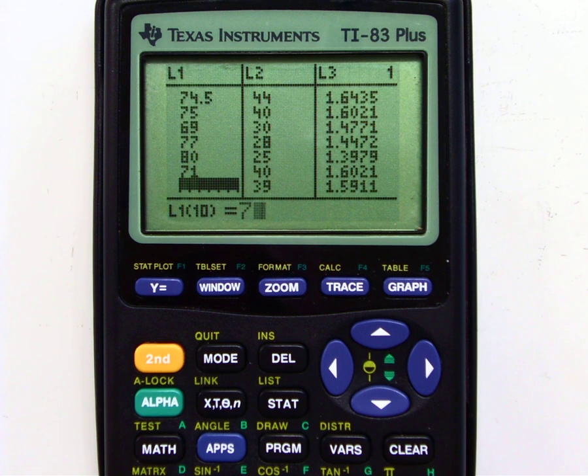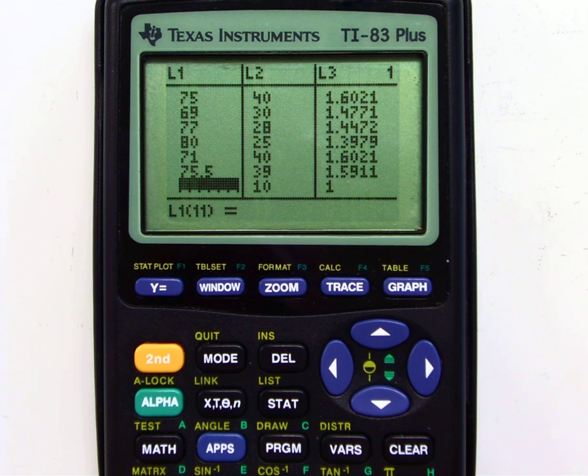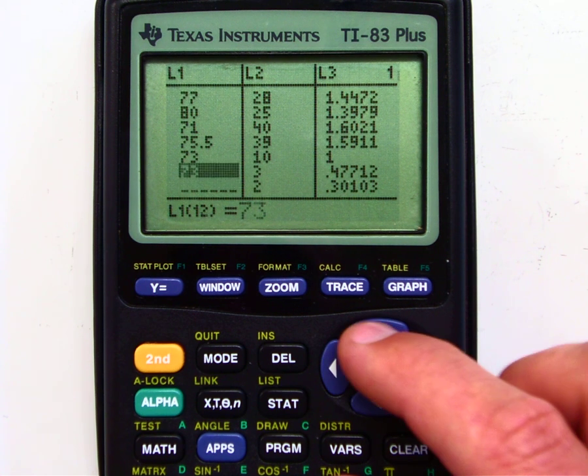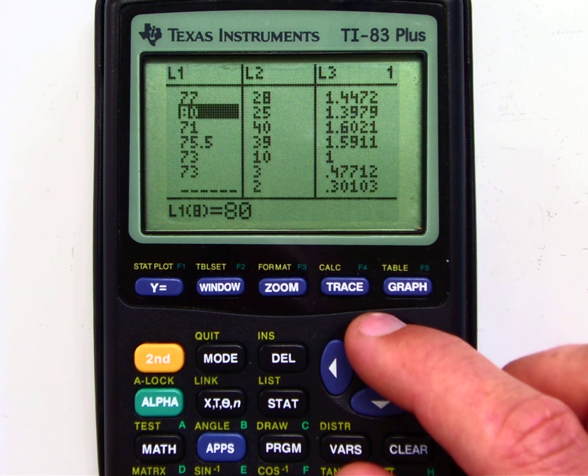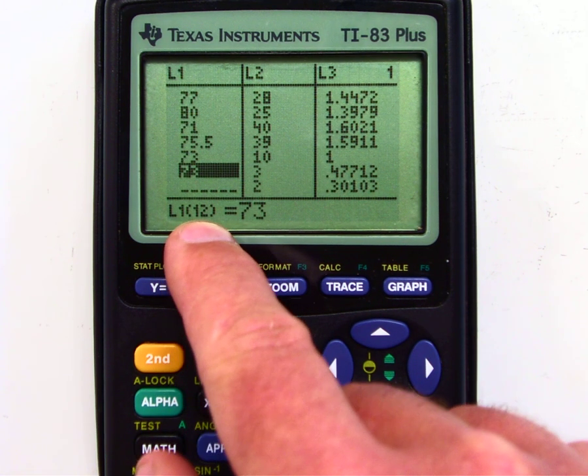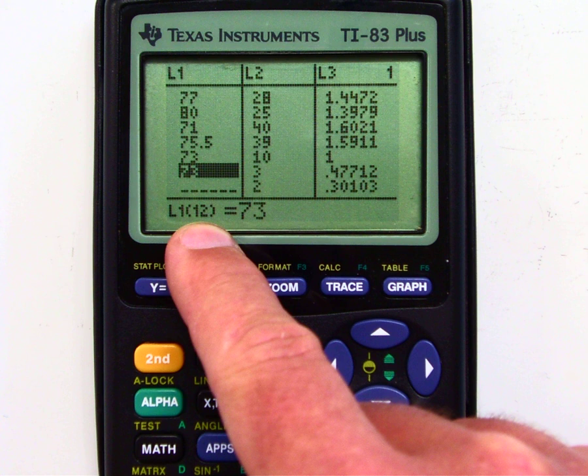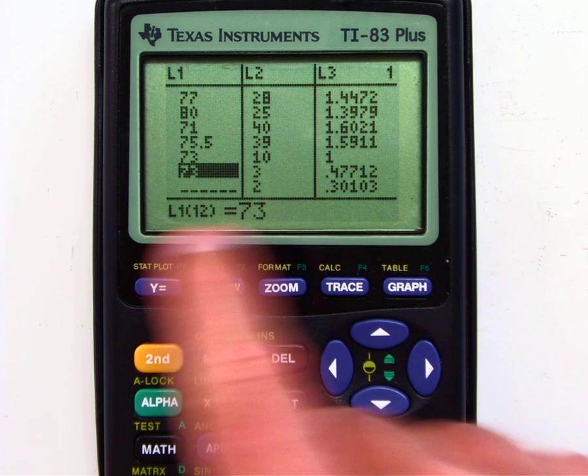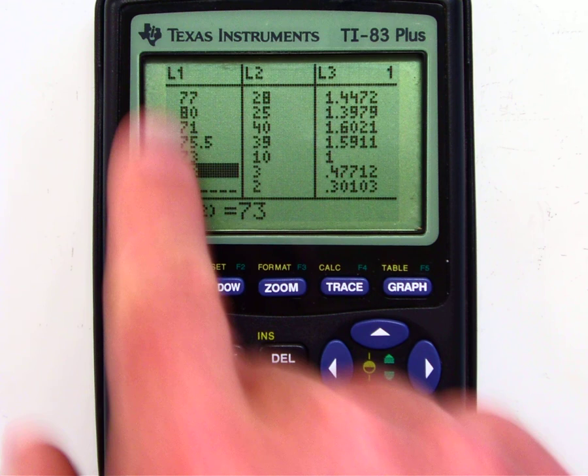And once the information is stored in here, you'll be able to graph, do any type of function you want. So notice I have here, I want to make sure that the little subscript here in parentheses is 12, which means that this is the 12th number is 73, and L1 is list one here.